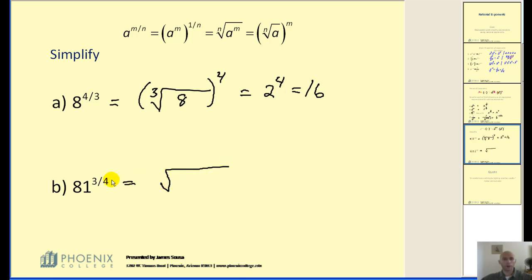And that verifies my answer. Let's try one more. We're going to radical form. Now my denominator is four. So this is the fourth root of 81 raised to the third power. The numerator of our fractional exponent is three.